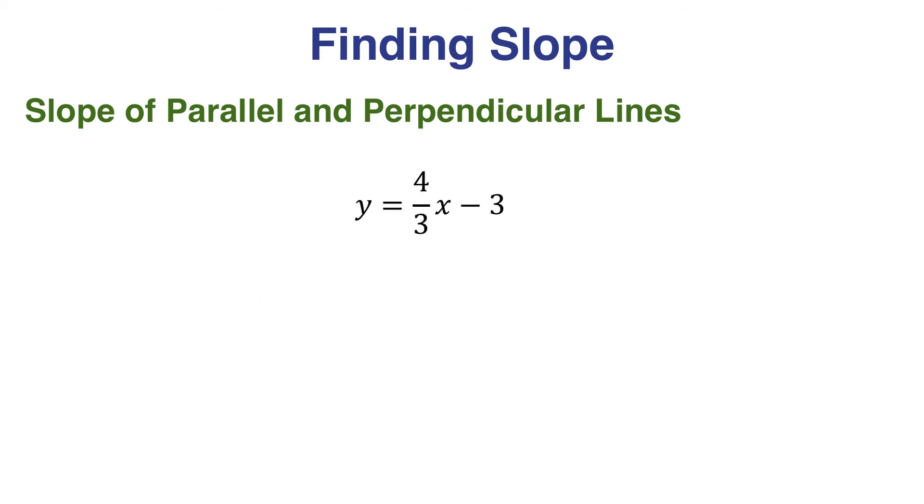Let's take a look at the graphs. Always good to see if your answer makes sense. And for me, pictures are helpful. The graph of our original equation, y equals 4 thirds x minus 3, is here.